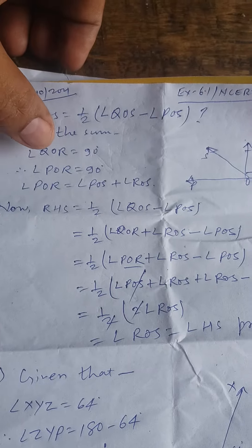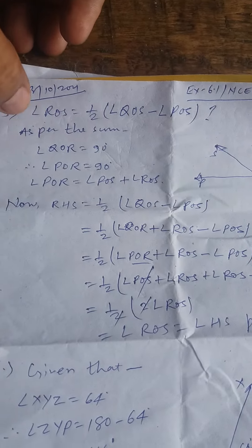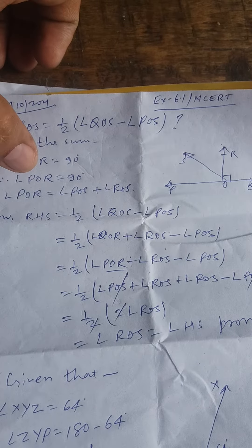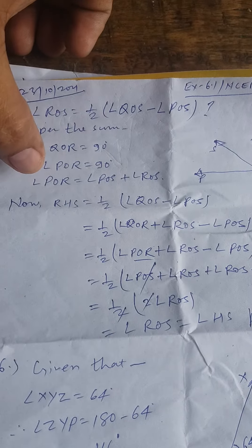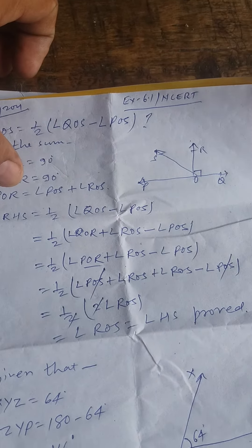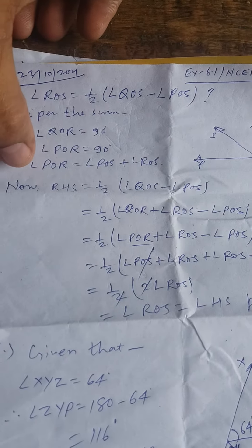Now, as per the problem, angle QOR equals 90 degrees. So angle QOR equals angle QOS plus angle ROS.